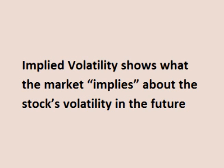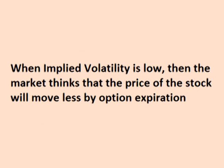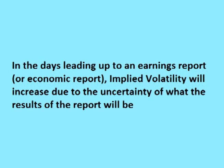Implied volatility shows the market's opinion of the stock's potential moves. In other words, implied volatility shows what the market implies about the stock's volatility in the future. When implied volatility is high, the market thinks that the stock has potential for large price movements in either direction before the option expires. When implied volatility is low, the market thinks that the price of the stock will move less by option expiration. Implied volatility is affected by things like upcoming earnings reports and upcoming economic announcements.